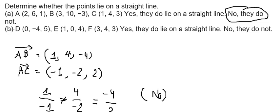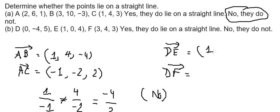For question B, we do the same. We need to find vector DE and vector DF. So we have 1 minus 0, you get 1; 0 minus negative 4, you get positive 4; and 4 minus 5, you get negative 1.